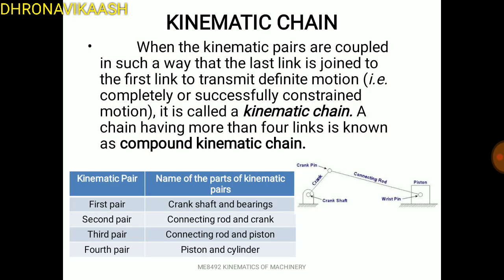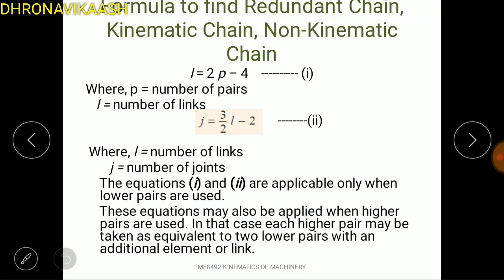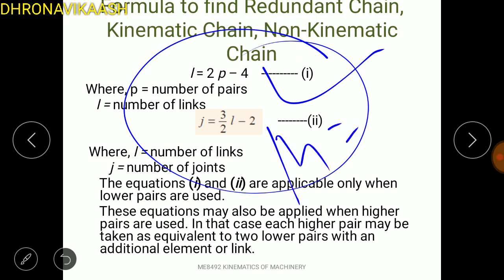Let's review from the last class on Kinematic Chain. We have a Kinematic Chain — how do you identify a Kinematic Chain or a 4-link chain? There is a formula: L equals 2p minus 4. We solve this formula. We solve the higher pair, specifically the first equation with one higher pair.